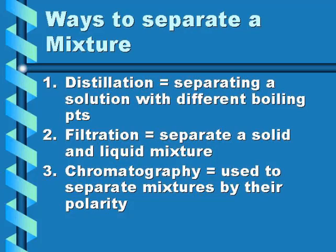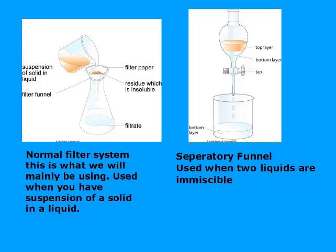In filtration, we have a suspension of a solid in liquid—we pour it through, the solid gets stuck in the funnel, and whatever dissolves passes through as the filtrate. We can dry the filter paper to determine how much solid was recovered. For two immiscible liquids, a separatory funnel can be used to separate them.